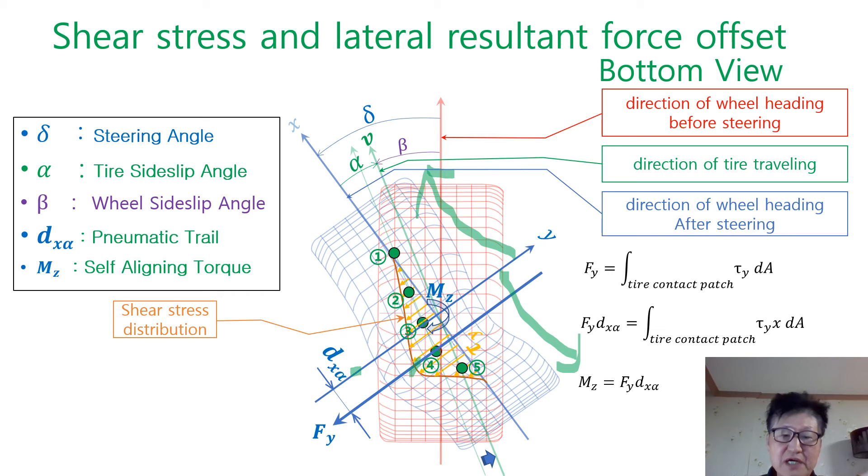That generates the resultant lateral reaction force in the following part with rearward offset distance, dx alpha. From the wheel center, we define dx alpha as pneumatic trail here. Pneumatic trail causes the moment mz here.